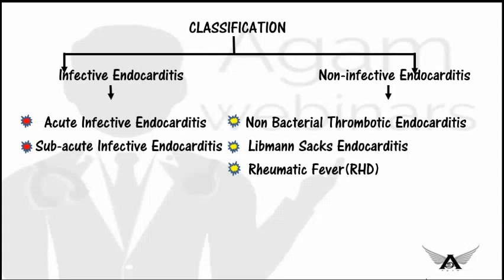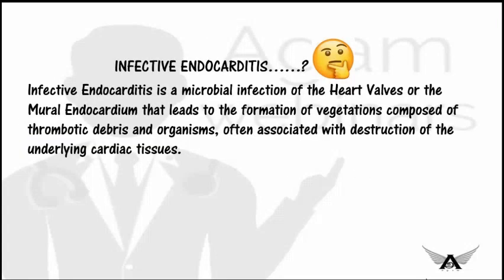Infective endocarditis is a microbial infection of the heart valves or mural endocardium that leads to the formation of vegetations composed of thrombotic debris and organisms, often associated with destruction of underlying cardiac tissue. In simple words, when the endocardium or heart valves are invaded by microorganisms — bacteria, fungi, or other organisms — it leads to the condition known as infective endocarditis.